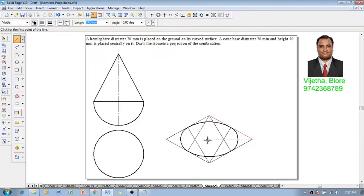Once we get the center of the ellipse, we know that the height of the cone is 70 mm. Also from here, the radius of the sphere is 35 mm. So we will draw both these lines. Then all the construction lines that are not necessary can be deleted.